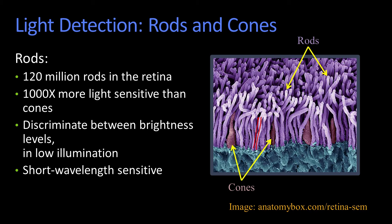The rods are these little skinny structures here, and there are something like 120 million rods plus or minus within your retina. They are very, very light sensitive — about a thousand times more light sensitive than the cones, if given time to adapt. And they can sort of help you discriminate between different illumination levels at very low overall illumination.